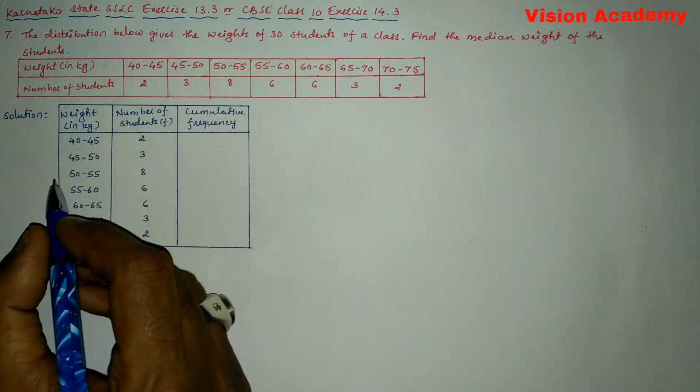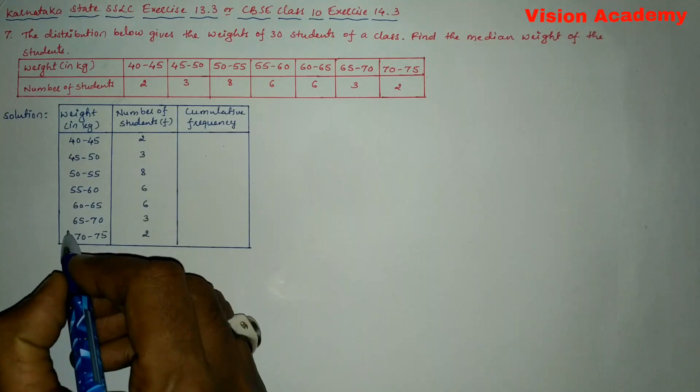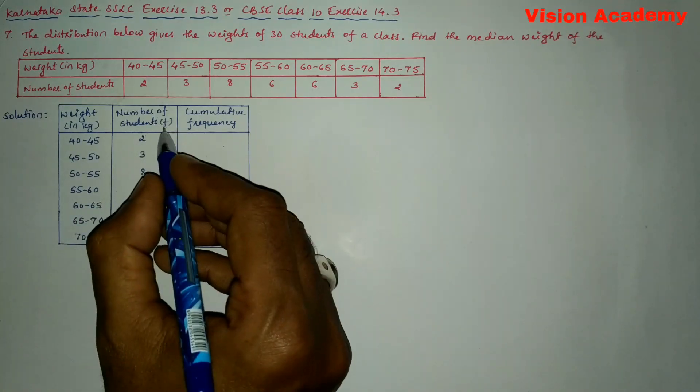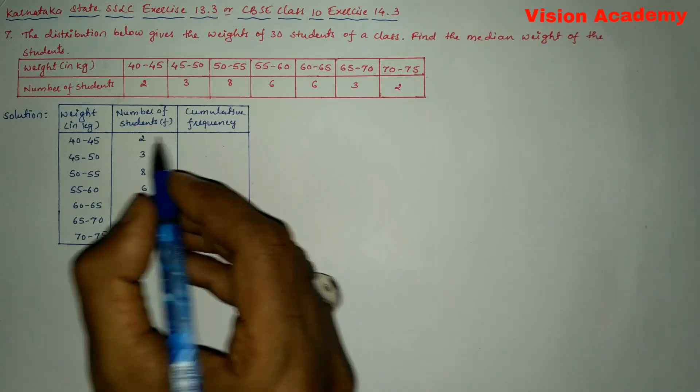Now let us find the solution for the given problem. I have already taken weight in kg and number of students as frequency. Next, in order to find the median we need to find the cumulative frequency.